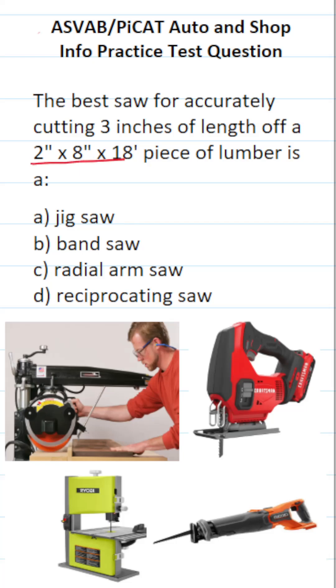The first thing I want to point out is that a 2x8x18 piece of lumber is pretty huge. It's 18 feet long, two inches thick, and eight inches wide. In other words, you're going to need a pretty big saw in order to cut three inches off the length of this piece of lumber.